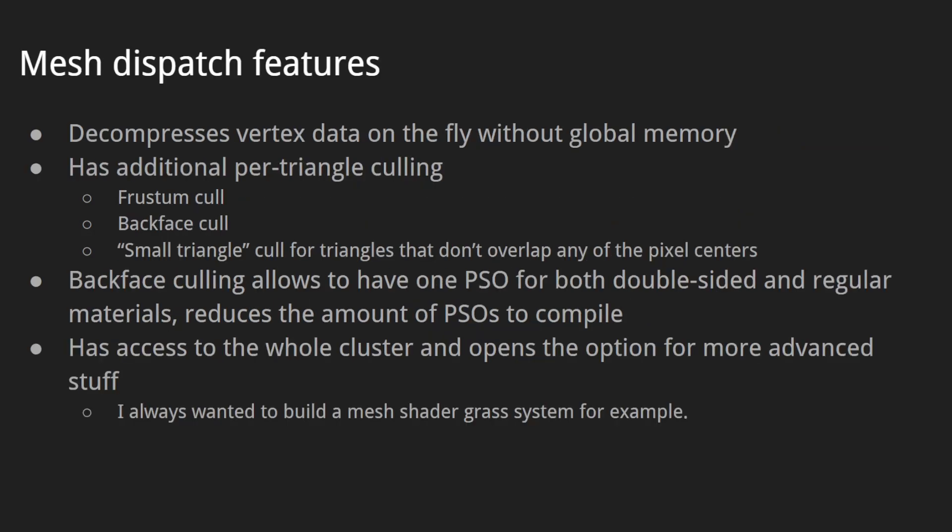In the mesh dispatch, we decompress vertex data on the fly without touching global memory. We also perform additional per-triangle culling: frustum culling, backface culling, and small triangle culling for triangles that don't overlap any pixel centers. If a triangle doesn't overlap any pixel centers, it's not contributing to the final image and can be discarded. Backface culling allows us to have one PSO for both double-sided and regular materials, reducing the amount of PSOs we need to compile. The mesh shader has access to the whole cluster, which opens up options for more advanced things — for example, I've always wanted to build a grass system using mesh shaders.